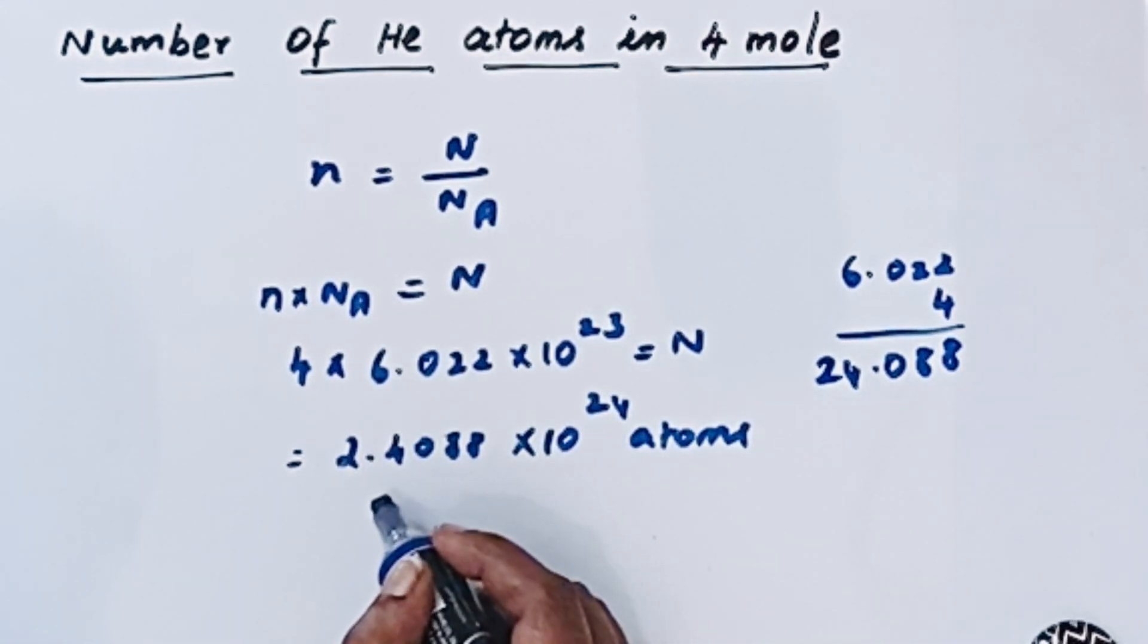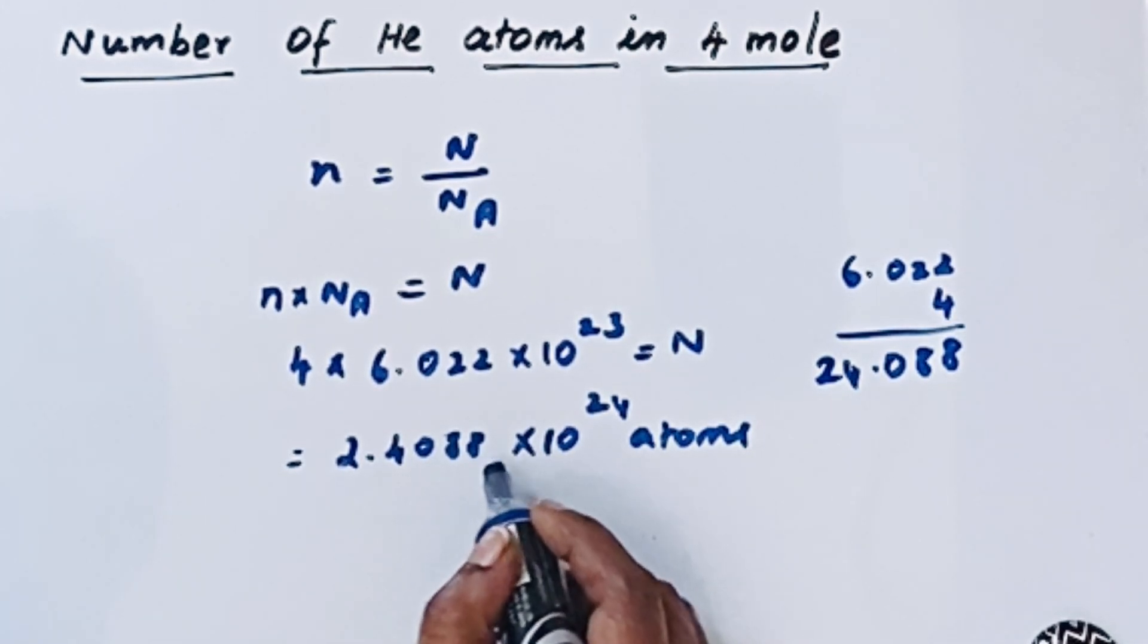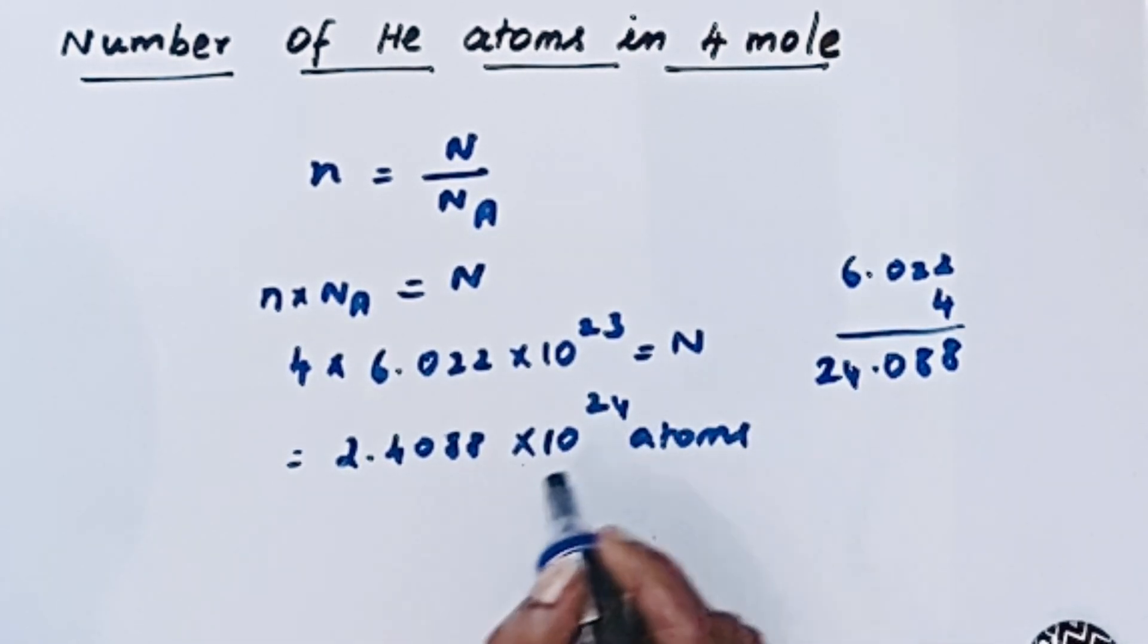So, 4 moles of helium contains 2.4088 × 10²⁴ atoms. Thanks for watching.